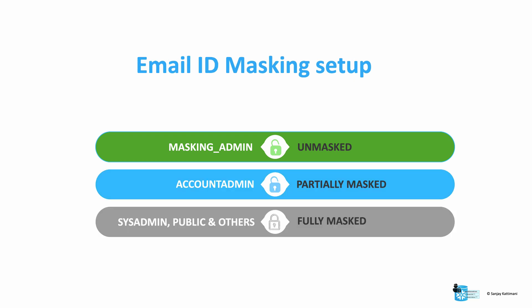Our email ID setup will have unmasked email IDs for masking admin role users. Account admin will see partially masked email IDs — only the domain name of the email ID will be visible to them. Everyone else including sysadmin, public, and other users will get to see a fully masked email ID, meaning they do not get to see any email ID related details.